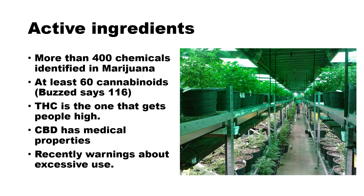What are the active ingredients — the chemicals — in the marijuana plant? More than 400 chemicals have been identified in marijuana, including at least 60 cannabinoids (one reference says 116). THC, tetrahydrocannabinol, is the one that gets people high and is what most people are talking about when they discuss marijuana. However, a second common cannabinoid, CBD, has been largely identified with medicinal properties. Various strains of the plant can produce varying levels of THC, CBD, and other cannabinoids. Recently there have been warnings about excessive use even of high-CBD products, because at high levels there seem to be physical withdrawal symptoms and nausea that have taken people to hospital emergency rooms.